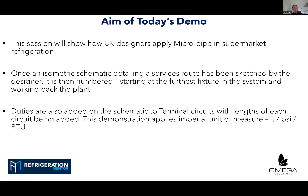This session shows how UK designers apply MicroPipe in retail supermarket refrigeration. Once an isometric schematic detailing service routes has been sketched by the designer, it is numbered starting at the furthest fixture or display case in the system, then working back towards the rack. Duties are also added to the schematic at terminal circuits, with lengths of each circuit being added. For this demonstration, I'm applying imperial units: feet, pounds per square inch, and BTUs.